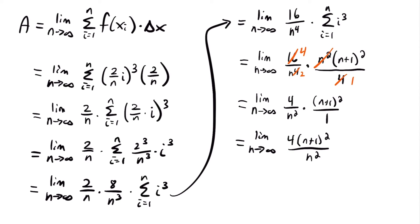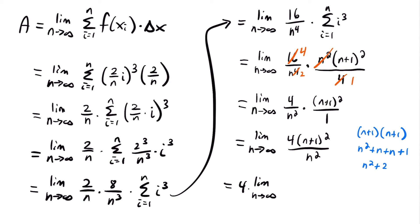We expand (n+1)² by multiplying (n+1)(n+1): n times n gives n², n times 1 gives n, 1 times n gives n, and 1 times 1 gives 1. Combining like terms, that's n² + 2n + 1. So we replace (n+1)² with this quadratic, giving us the limit as n approaches infinity of (n² + 2n + 1) divided by n².